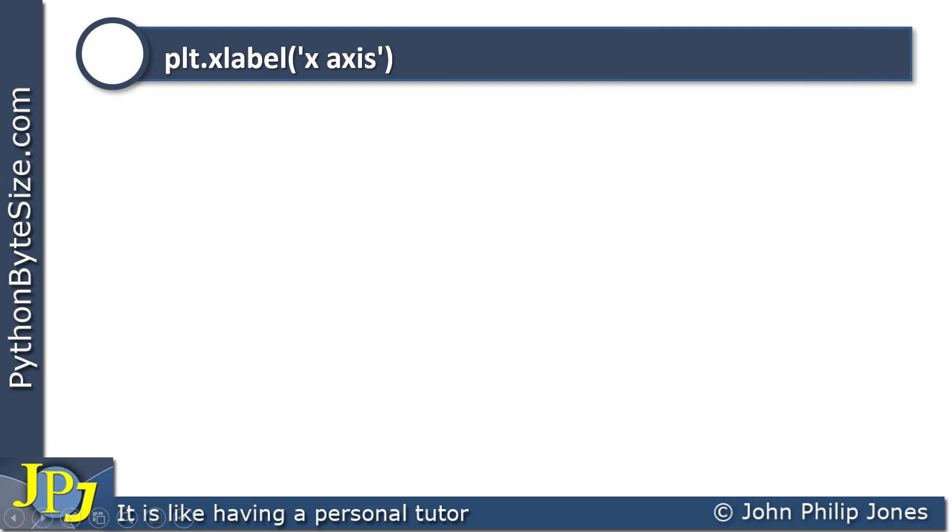So if we consider this example here, where we're invoking the xlabel, and just passing in the string x-axis, what you're going to see appear at the output is the following, and you can see the label is x-axis.